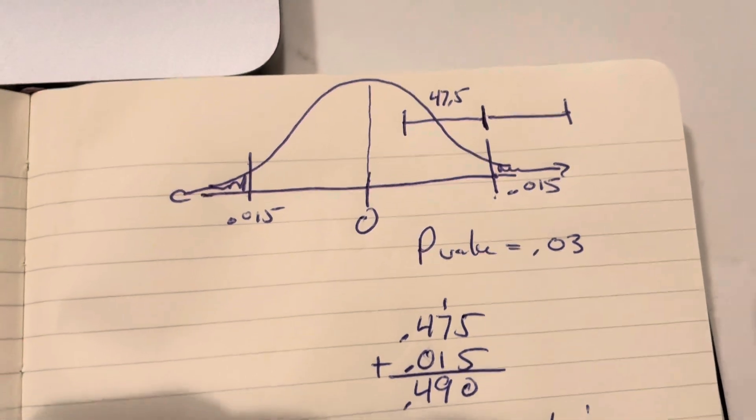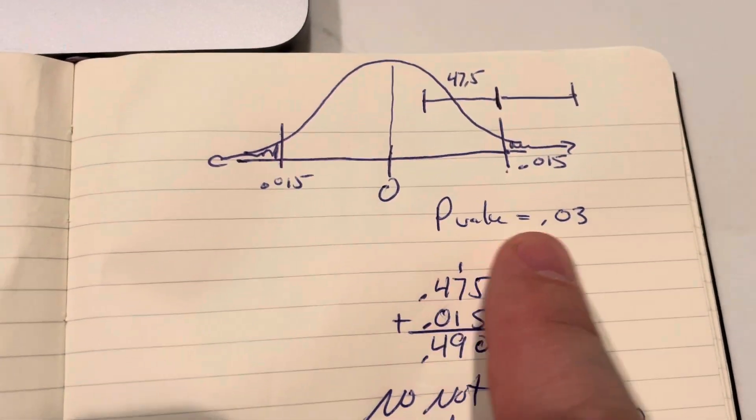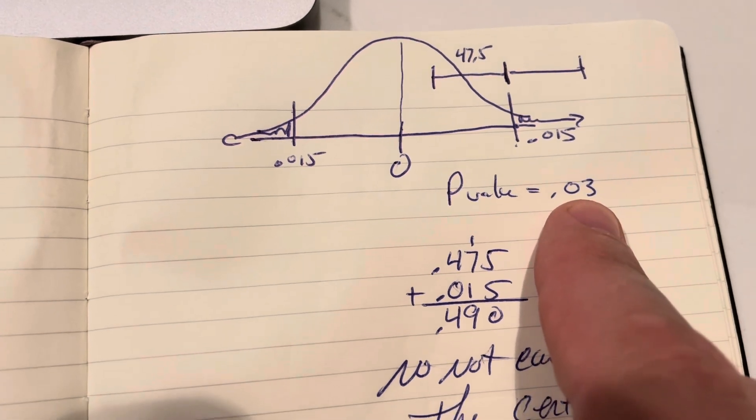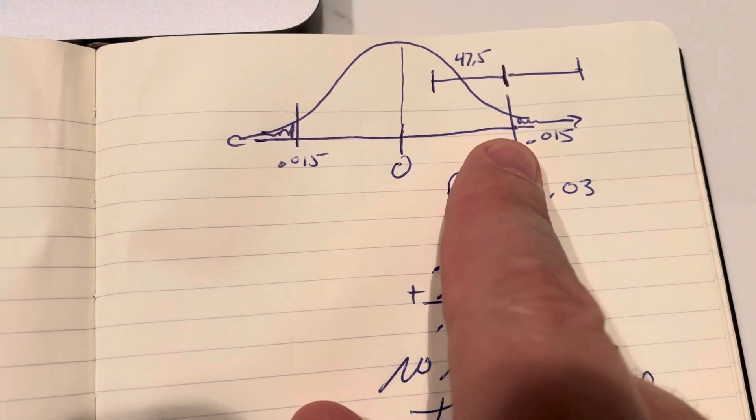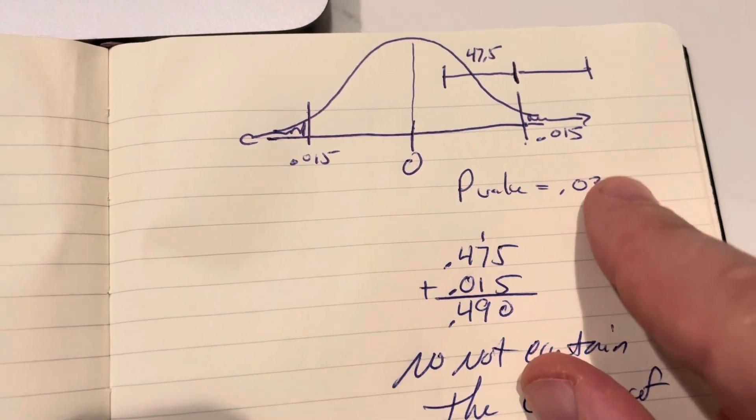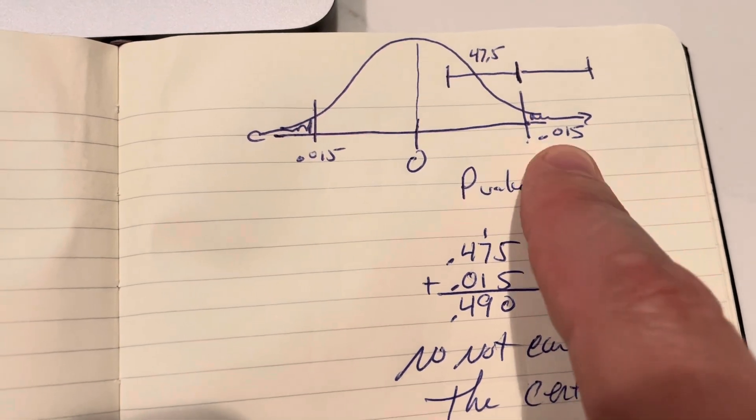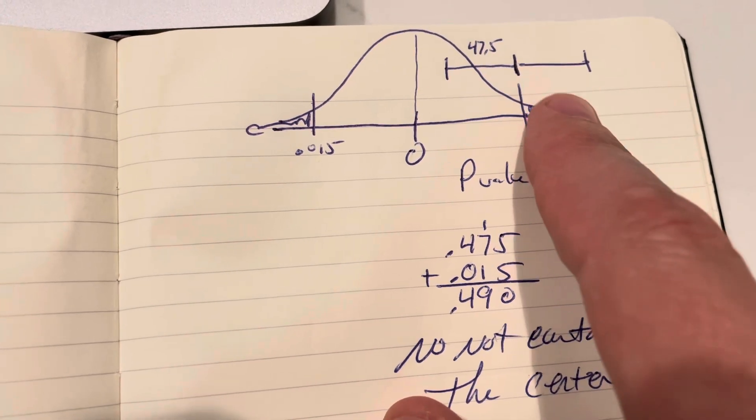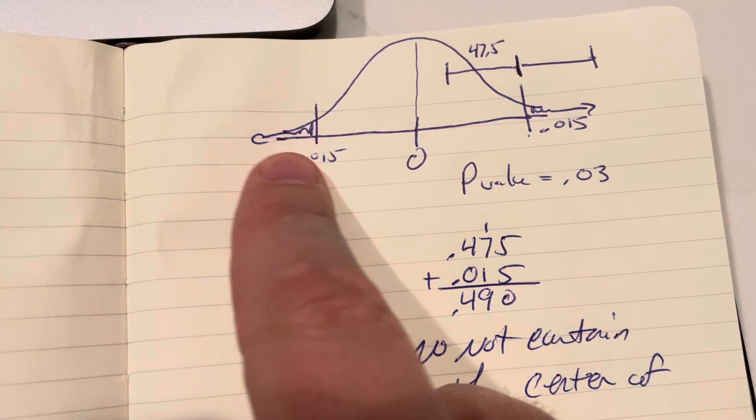So here's my sketch. When your p-value is 0.03, what's happening here is you're taking your test statistic and you put it on both sides because it's a two-tailed test. And the p-value gets split. So over here is 0.015 and that's the area there. And over here is 0.015.